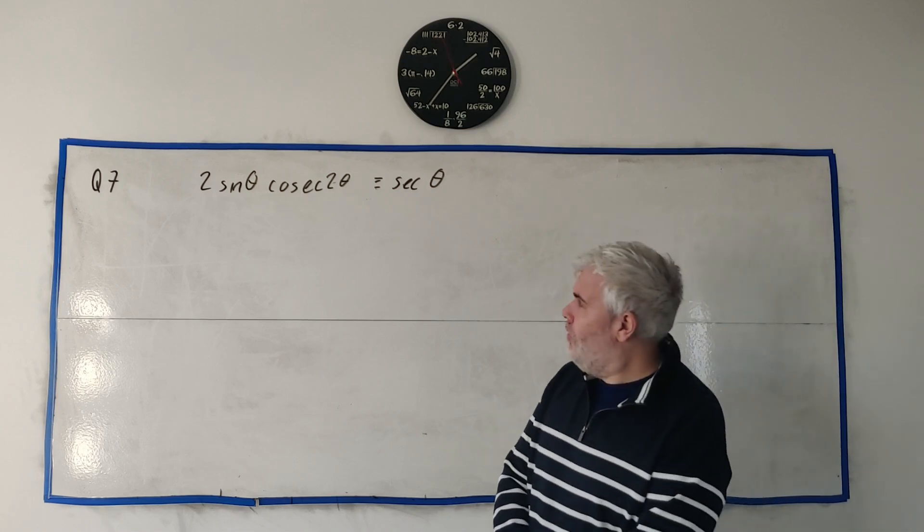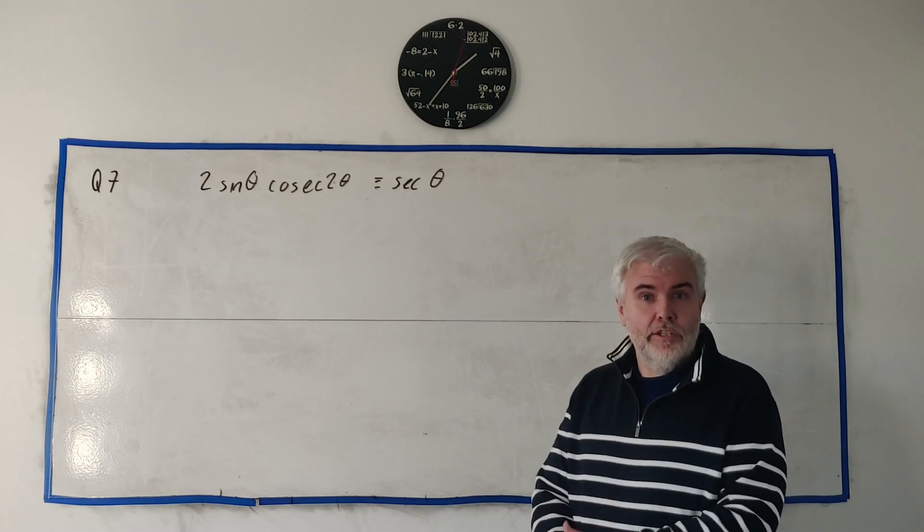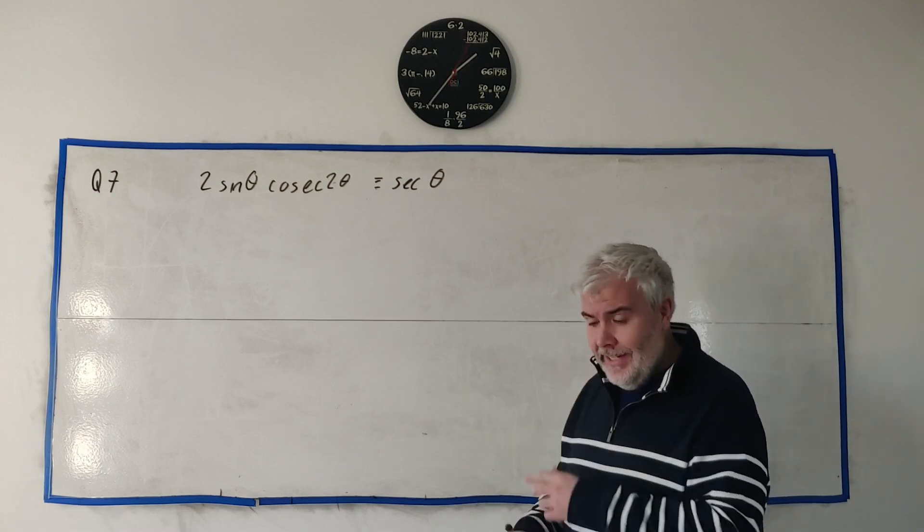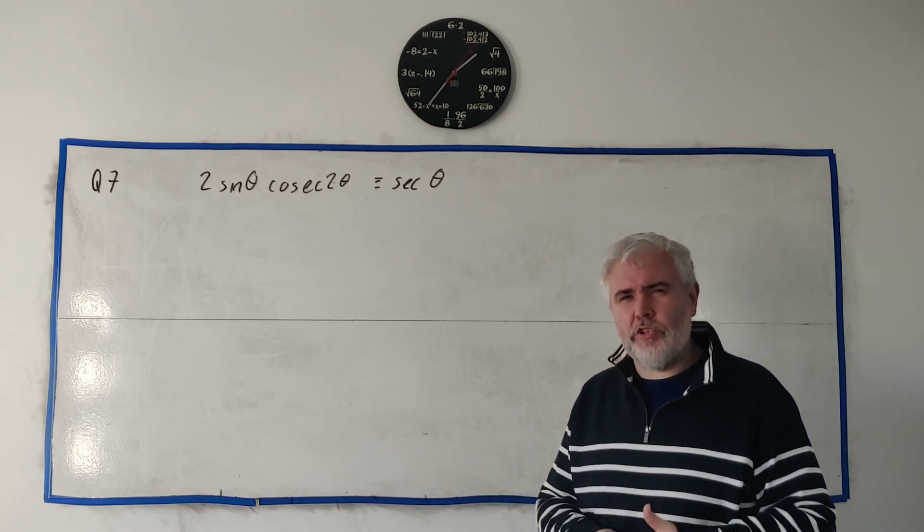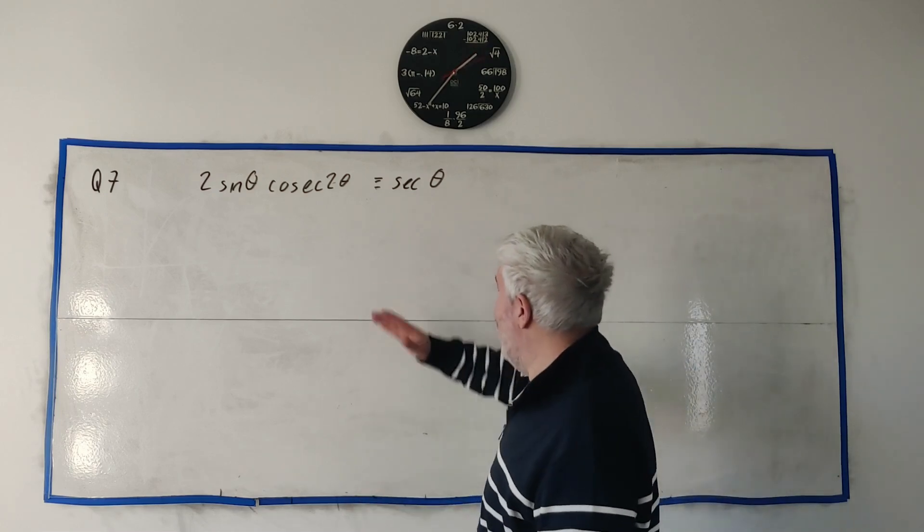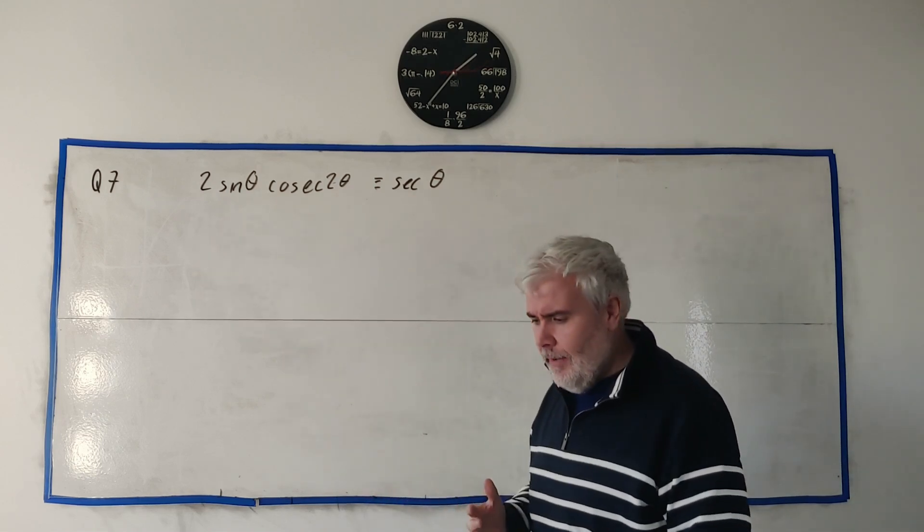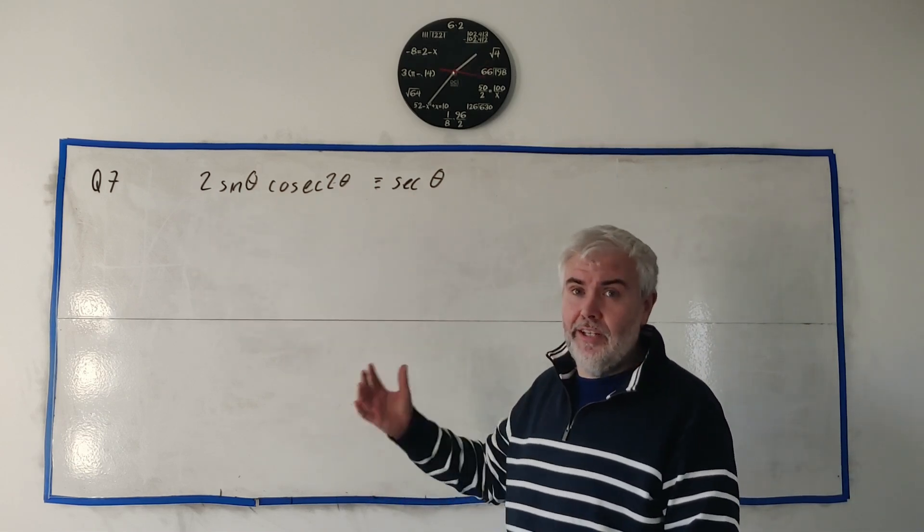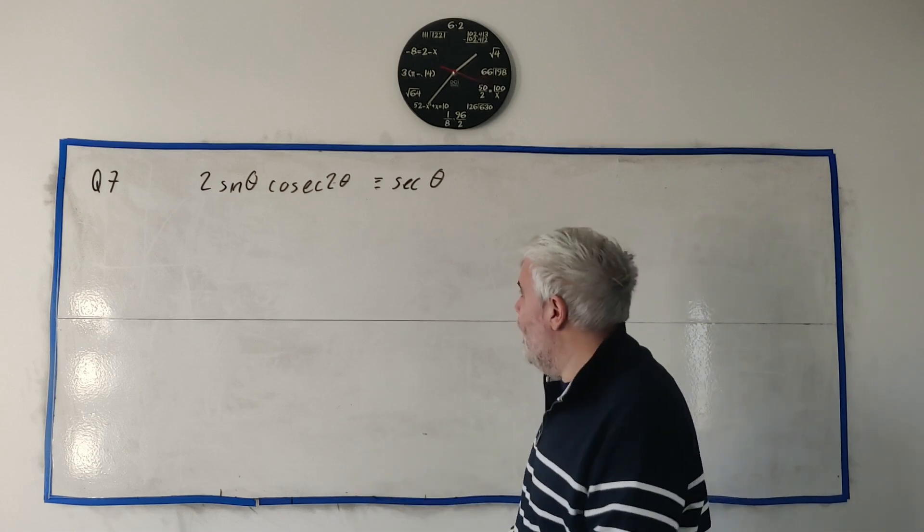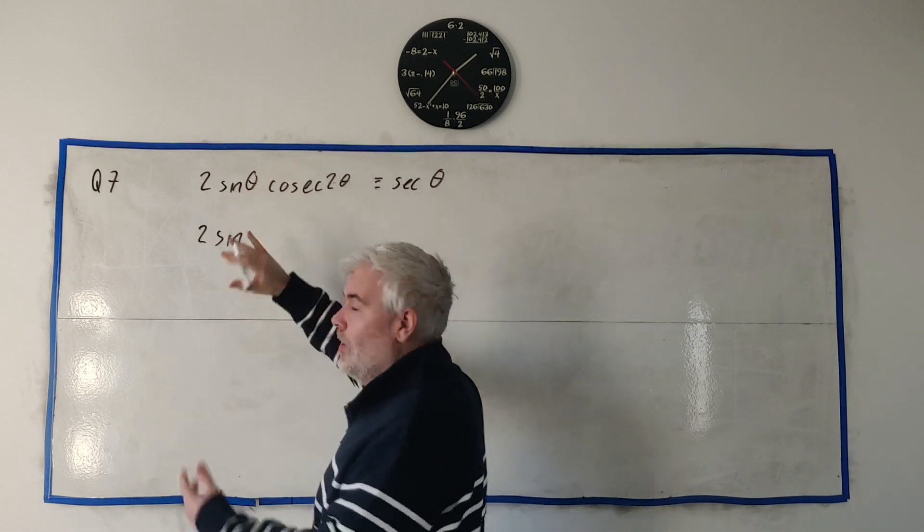Question seven starts off with a trigonometric identity that they want us to prove. It's not actually that difficult of a one, it just has a couple of tricks in it. The first trick comes to me quite naturally because I never use secant and cosecant. So whenever I see them, the first thing I do is I change them into sine and cosine.